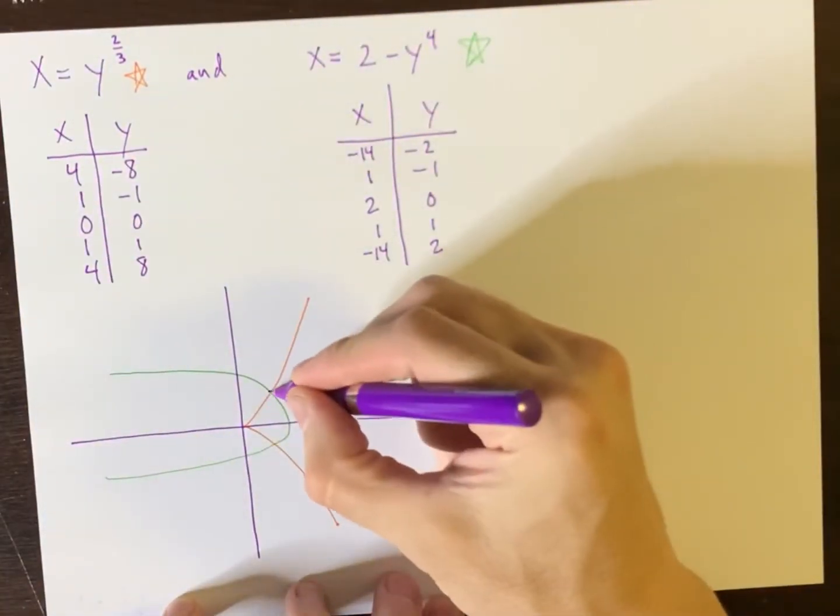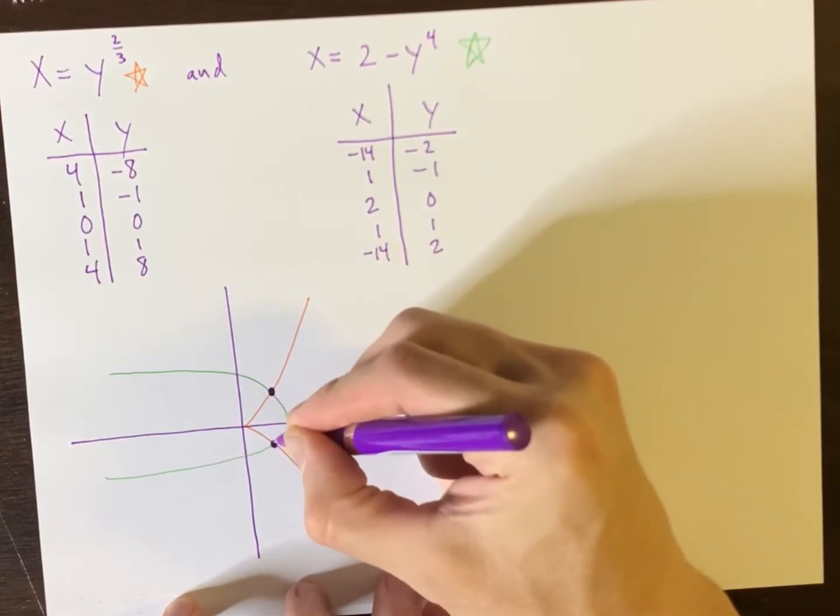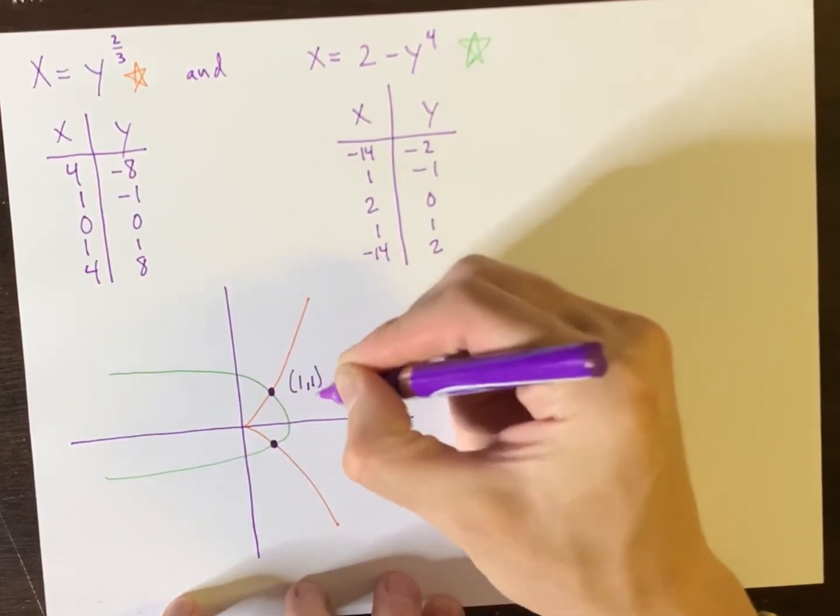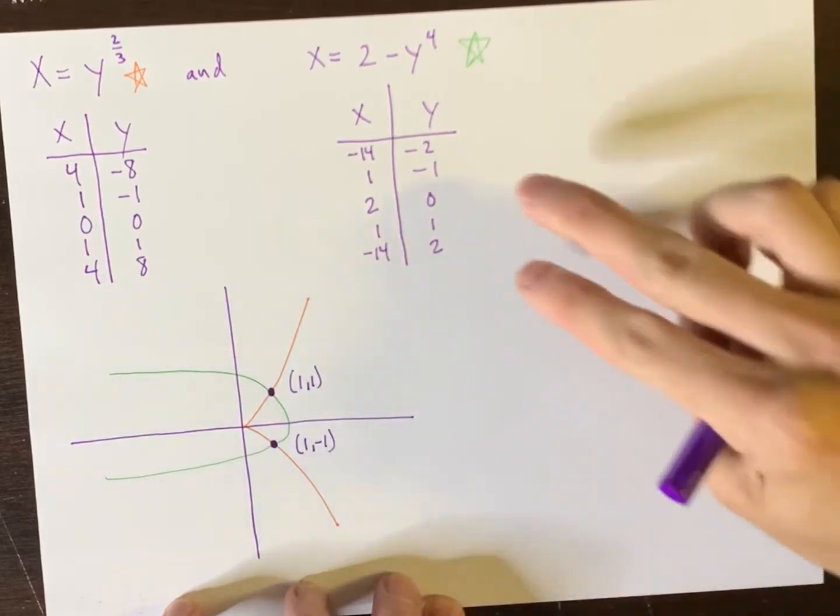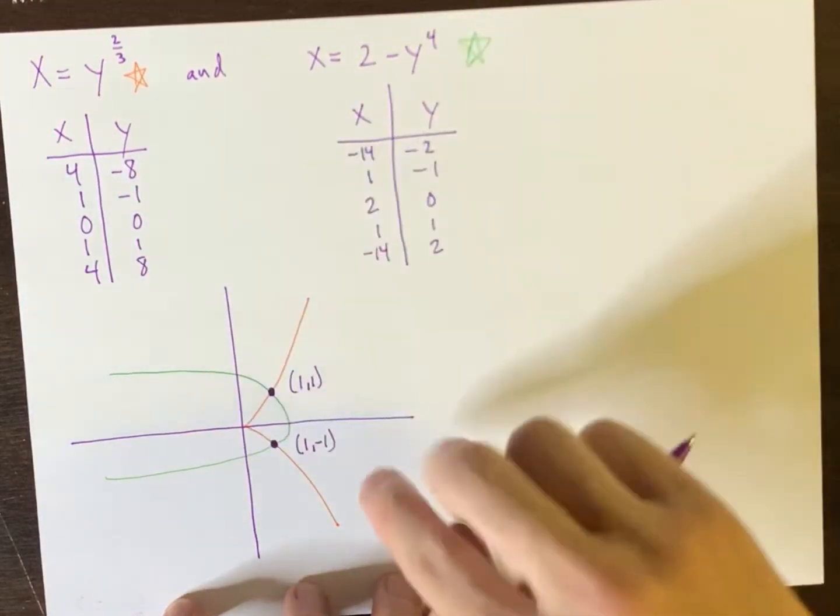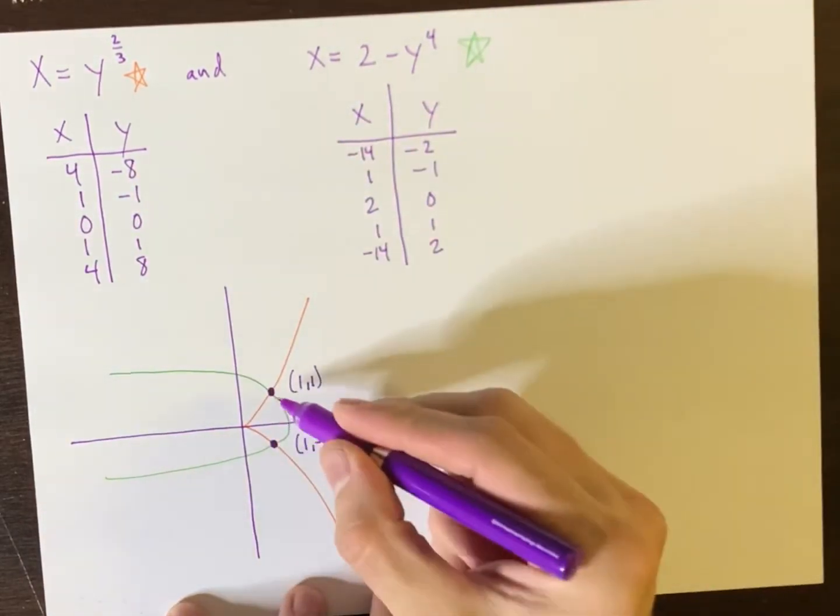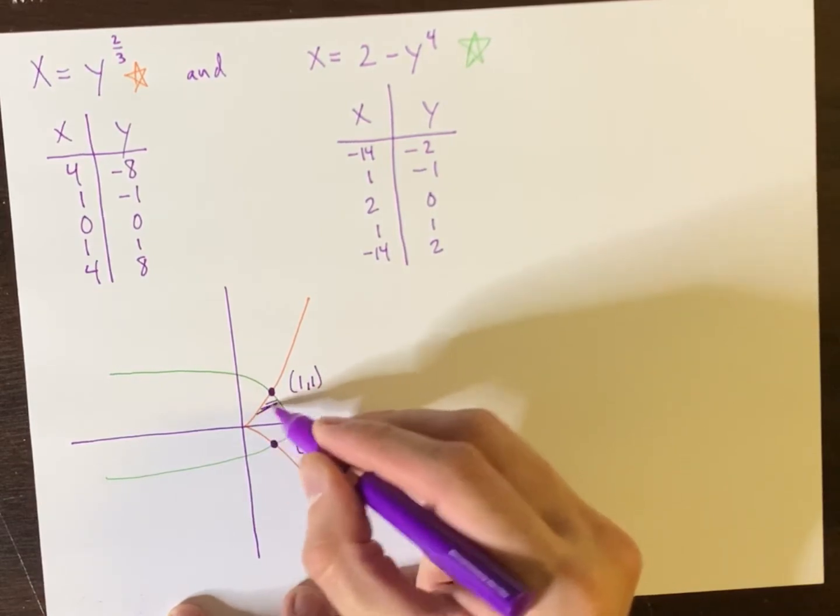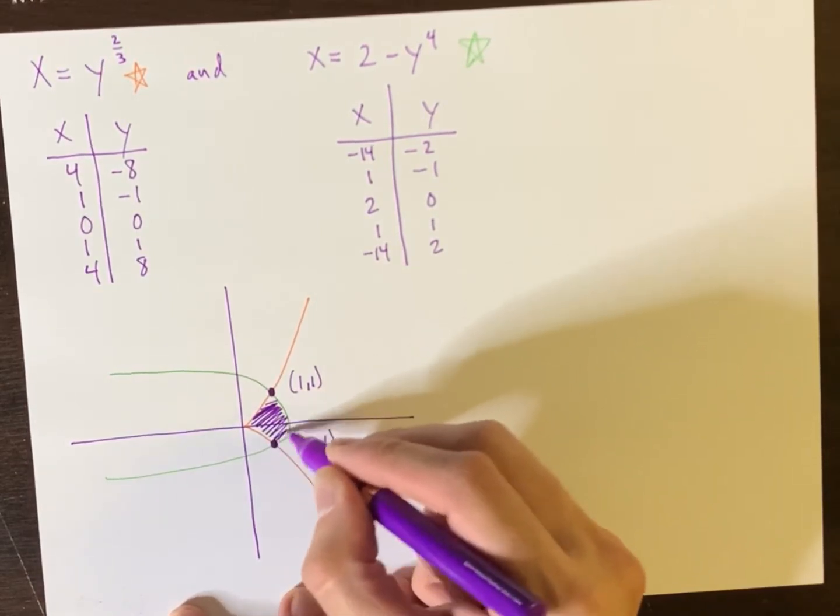And they have the following points of intersection, namely one, one, and one, negative one, which you can see there and there. This is necessary. We need to know the points of intersection so that we can find the area bounded between them, which is this purple region there.